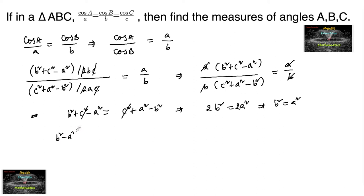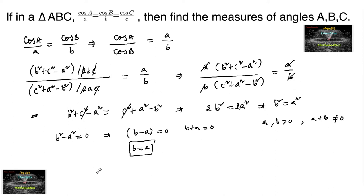That is B² − A² equals 0. Either B − A equals 0 or B + A equals 0. Since A and B are positive, A + B cannot equal 0. Therefore we can consider B is equal to A.